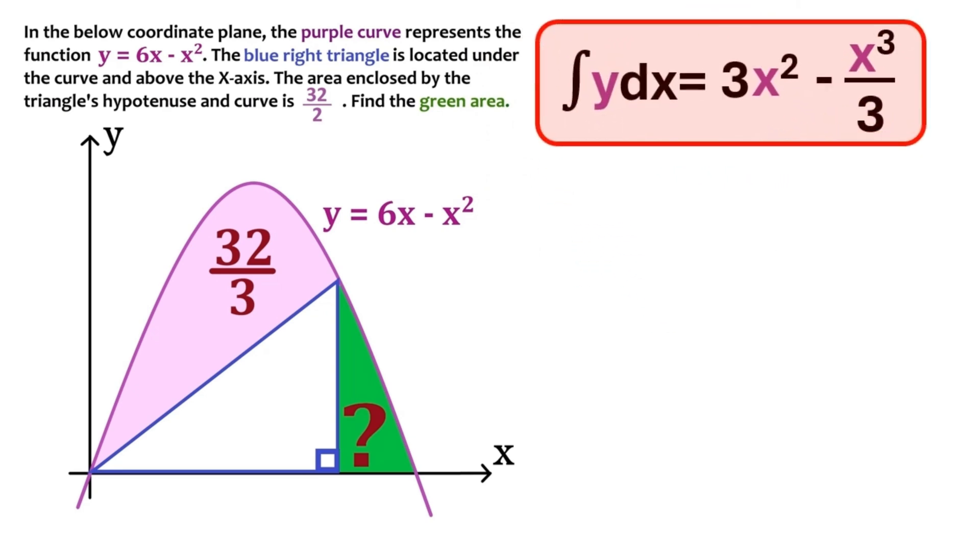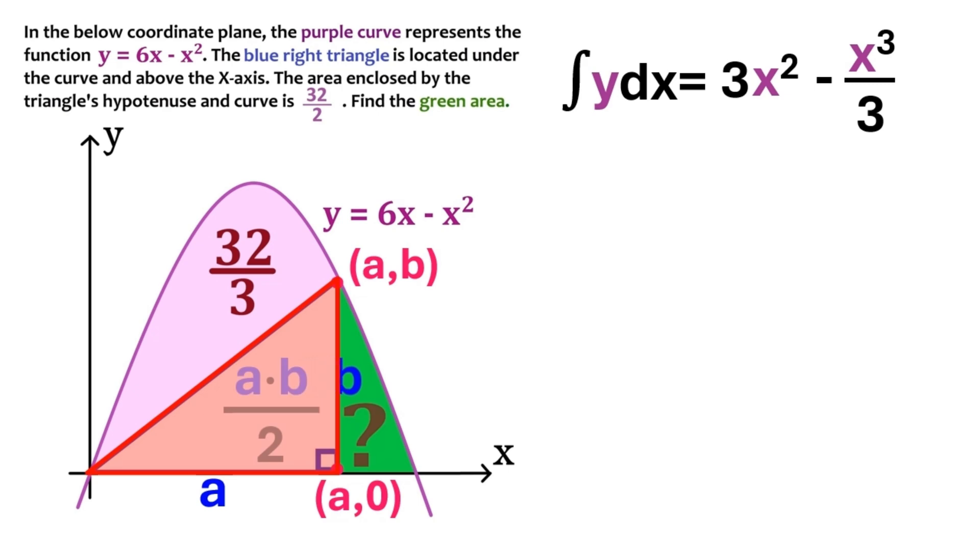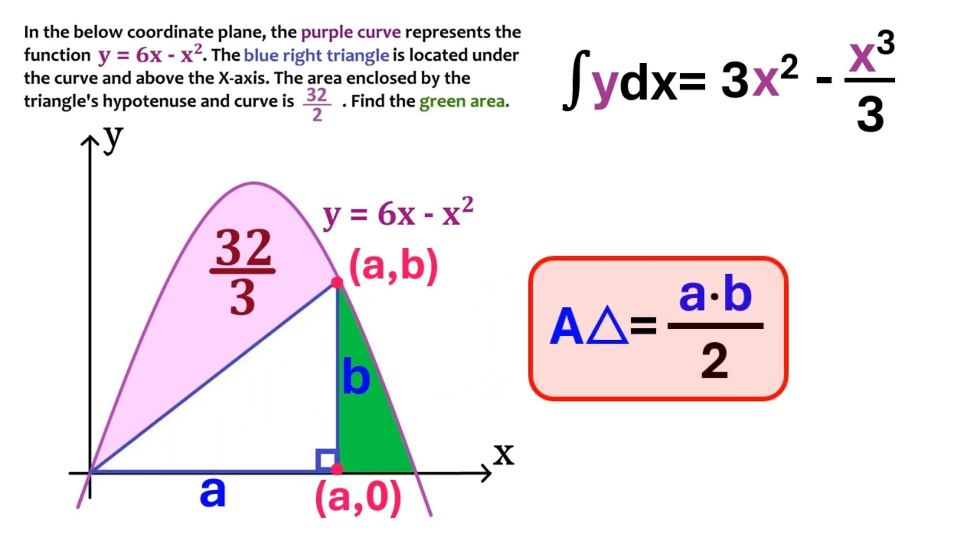But before we use it, I want to find this triangle's area. Now, let's say this distance is a. Then the coordinates of this point will be a0. And let's call this distance b. Then the coordinates of this point will be ab. And the area of this right triangle will be a times b over 2. Let's write that down as an equation.